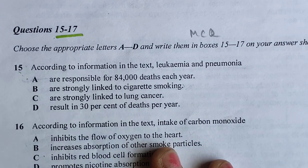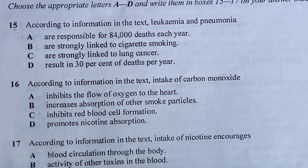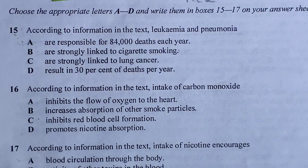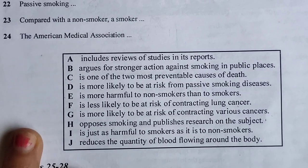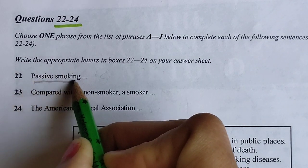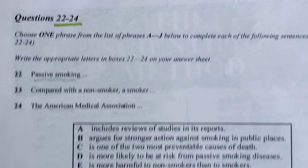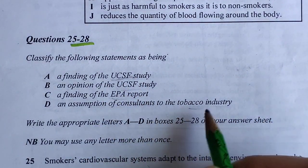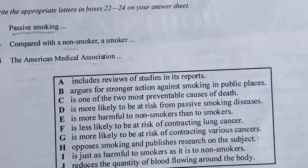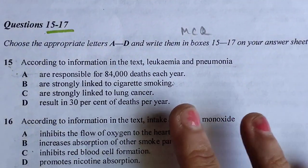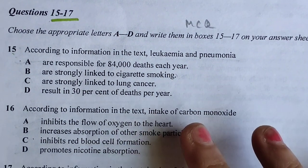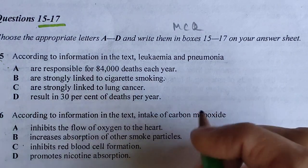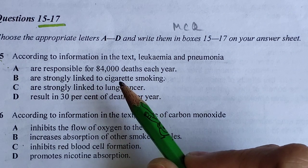Within the first paragraph there are also some different kinds of keywords I will show you. When we are doing these types of questions, side by side please underline things within the paragraphs. Key terms include: passive smoking, American Medical Association, non-smoker, UCSF, EPA, and tobacco industry. When reading paragraphs with these types of questions, please underline as you go.